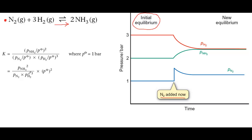But we can use K, the equilibrium constant, to get a deeper understanding of what happens to the partial pressure of each component. Look at the expression for K, and remember that the value of K must remain constant at a constant temperature.